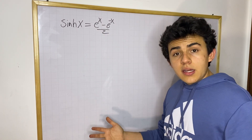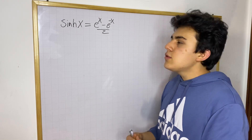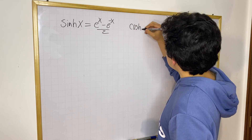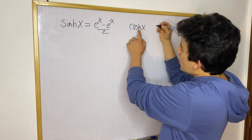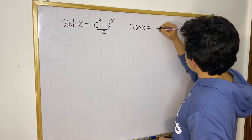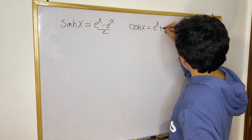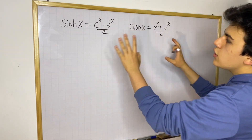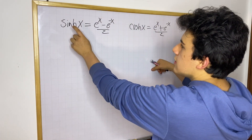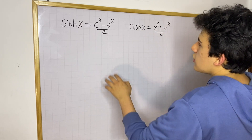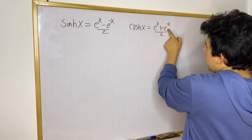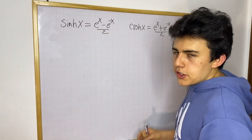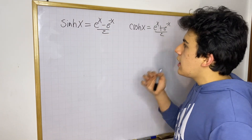What about hyperbolic cosine, which is pronounced cosh? Cosh(x) is defined as: cosh(x) = (e^x + e^(−x)) / 2. The only difference between sinh and cosh is that the e with the negative exponent has a negative sign in sinh and a positive sign in cosh — that is the only difference.